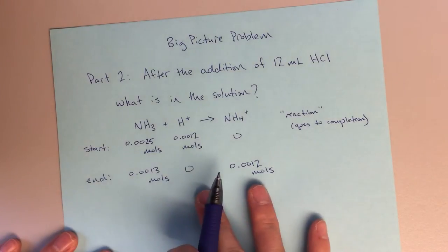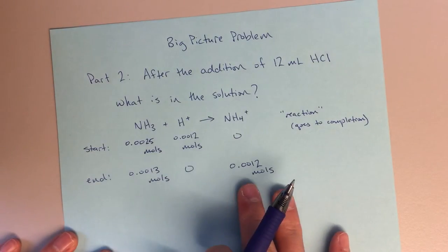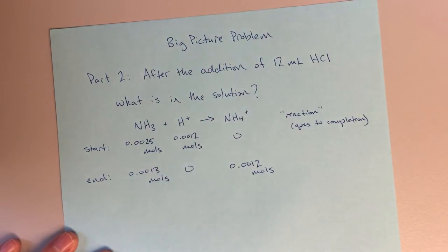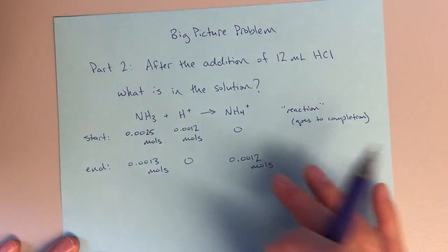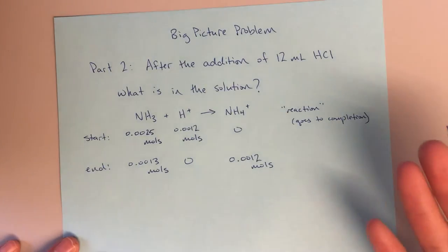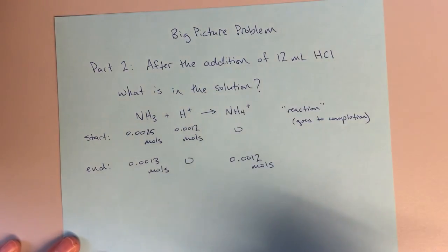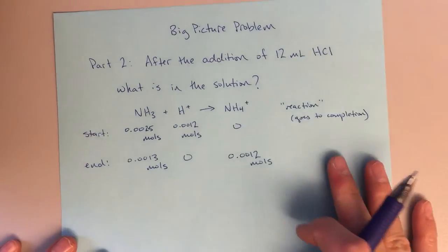So these are going to be my number of moles of NH3 and NH4+. Those will be the species that are present in solution at this time. And that's what I'm going to use to then solve for the pH, either using the Henderson-Hasselbalch equation or using an ice table.